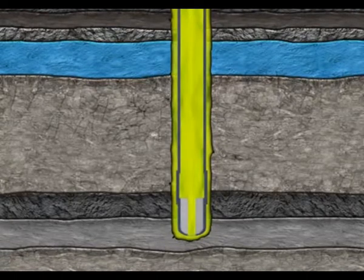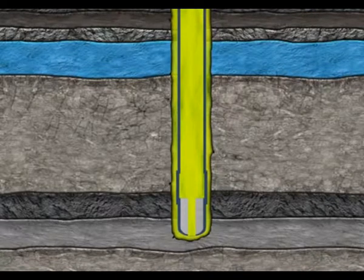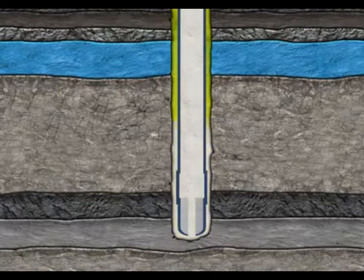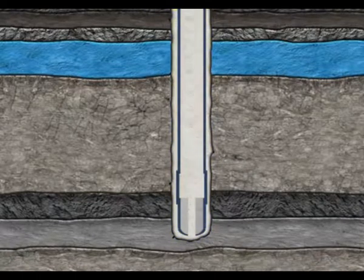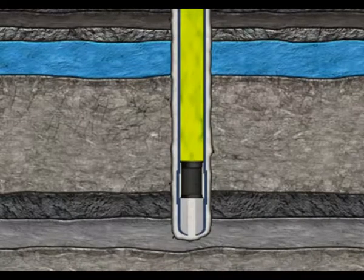In order to secure the laid casing string to the formation, cement is pumped through the casing shoe at the bottom of the well, letting the cement flow between the casing and the formation. To allow further operations in the well, the cement requires sufficient curing time.